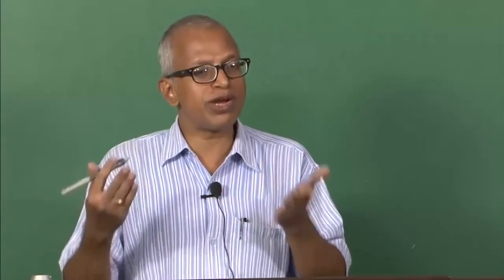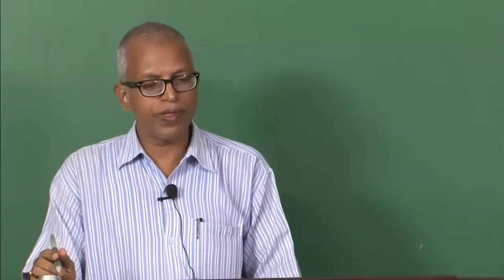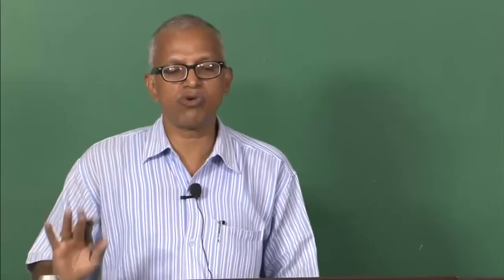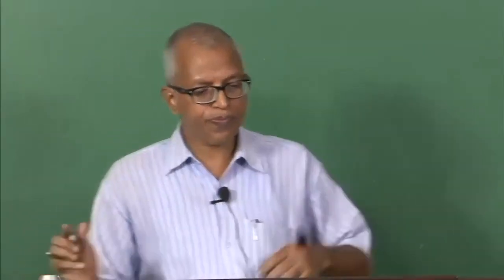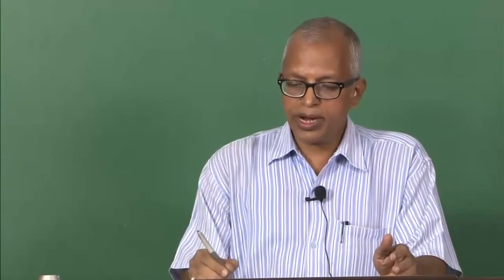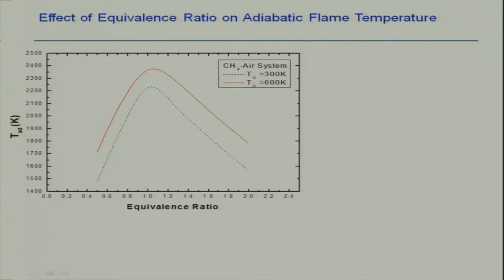The peak temperature will be occurring near stoichiometric. Let us look at the effect of equivalence ratio on adiabatic flame temperature. For the methane-air system plotted here, the peak value — for the 300 K curve (the black one) — occurs somewhere around equivalence ratio slightly above 1.